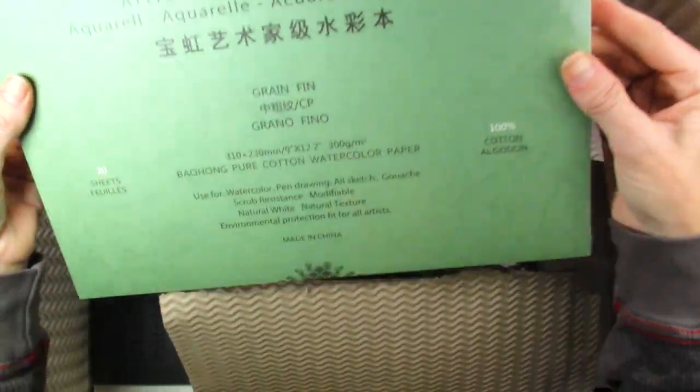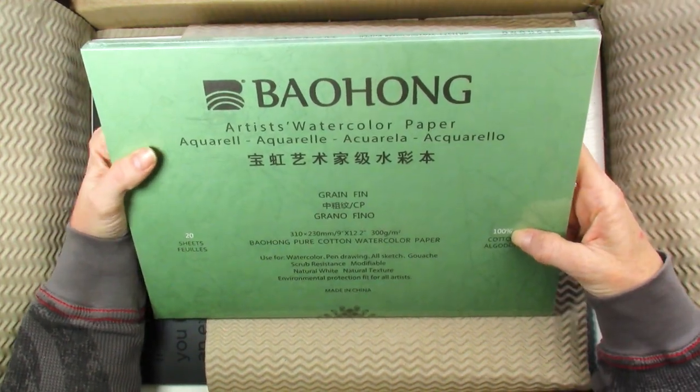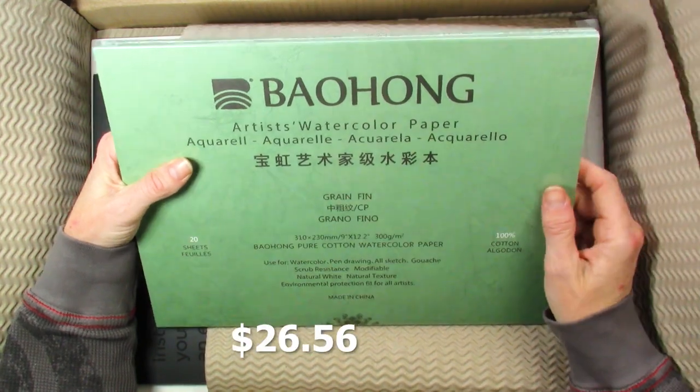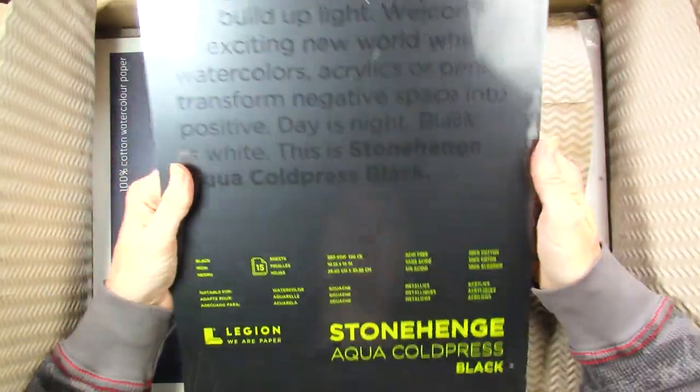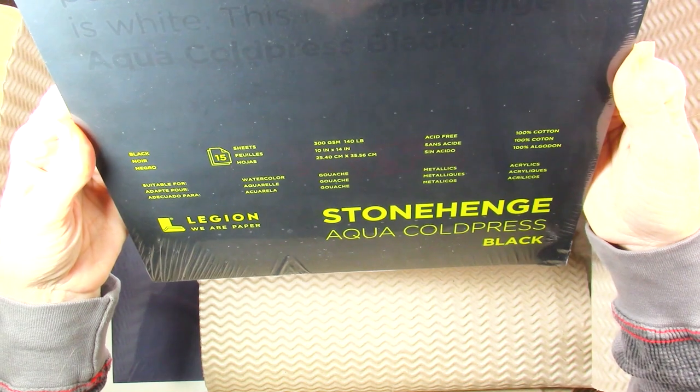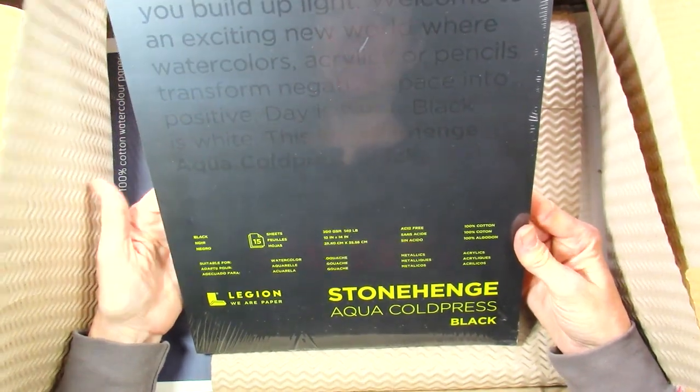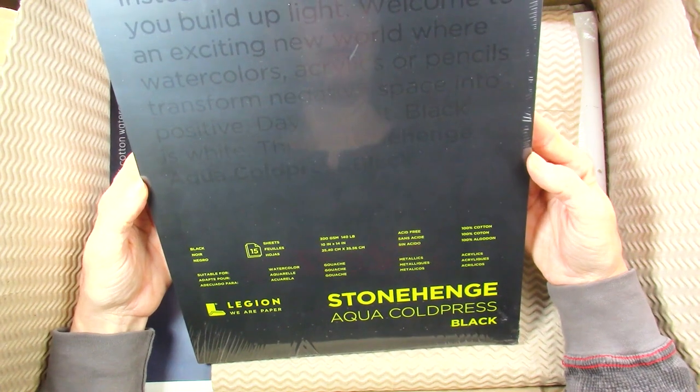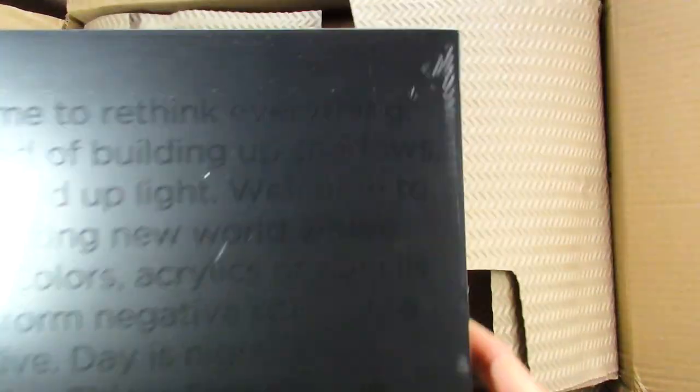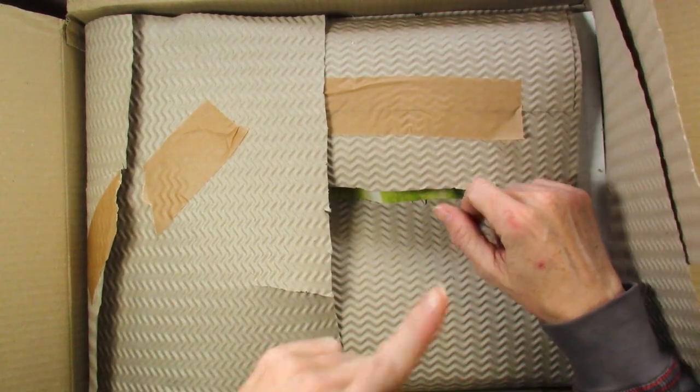And then I've seen this paper a lot online with other artists using it and they really like it. It's also 100% cotton, 300 GSM, 20 sheets. I needed black watercolor paper, 15 sheets, and I got this size. This is the 10 by 14. I was looking at all the prices and this seemed like the best deal because I could also just cut it in half. I have some metallic watercolors and professional gouache now.